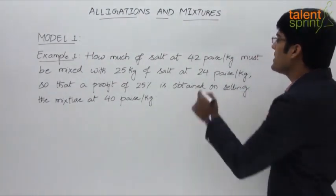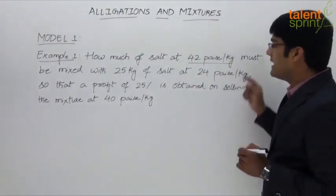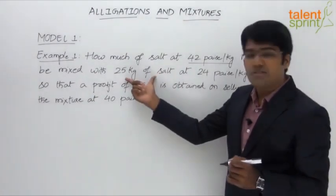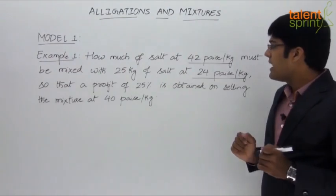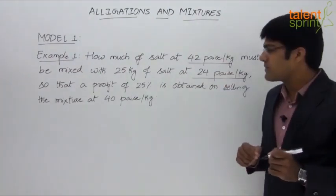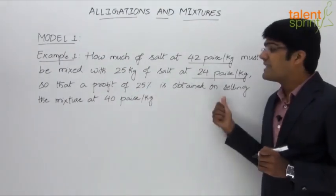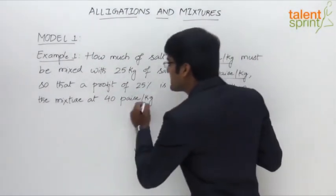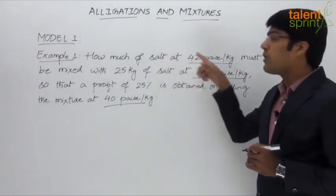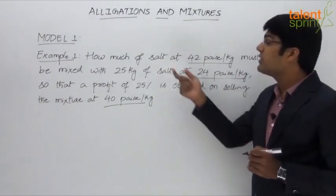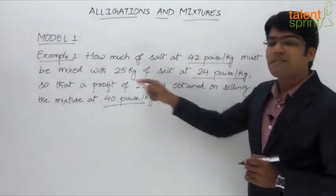The first quality of salt is at 42 paisa per kg, and it is mixed with 25 kg of another variety of salt at 24 paisa per kg. On mixing these two varieties, we can get a profit of 25% by selling the mixture at 40 paisa per kg. We need to find how much salt at 42 paisa per kg is required.